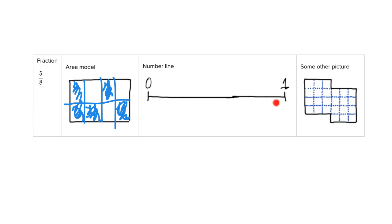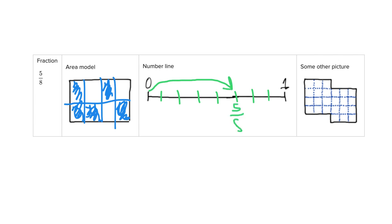For the number line, I need to cut it into eight equal sized pieces. I start by cutting it in the middle, then cut each half in half, then cut each of those in half. Now I have eight equal intervals — one, two, three, four, five, six, seven, eight. I go over five of them: one, two, three, four, five — there is my five-eighths.